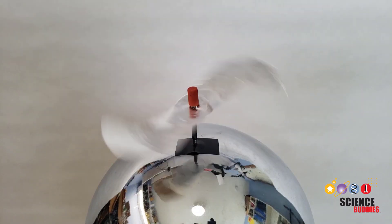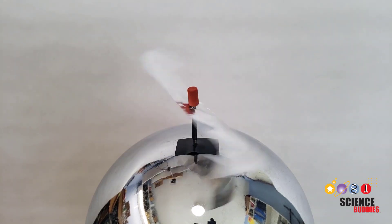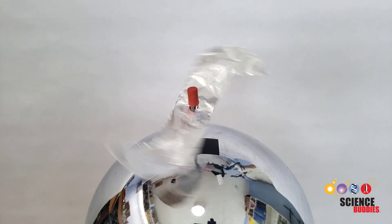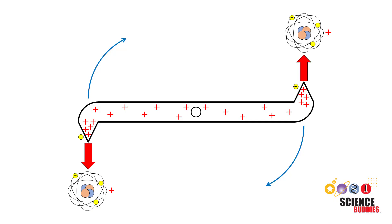The previous video, which you can find linked in the description below, shows you how to build an ion wind rotor using a Van de Graaff generator, a nail, and a piece of aluminum foil or aluminum cut from a beverage can. You can also check out that video to learn how exactly the ion wind rotor works.